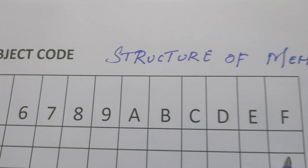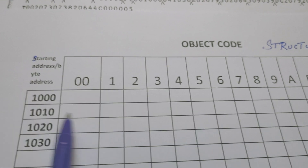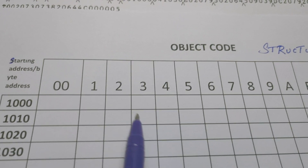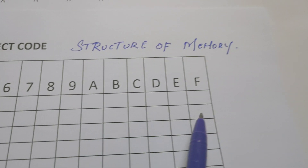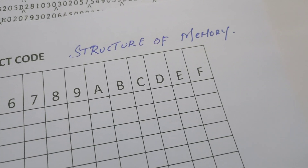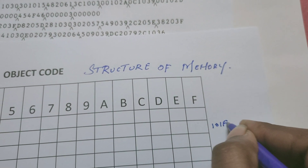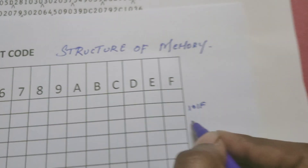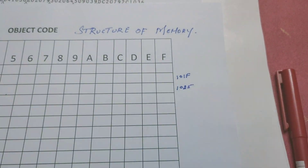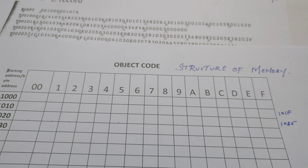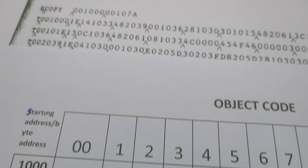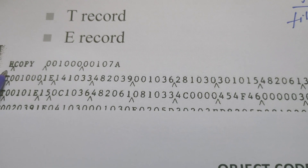After 100F the next address is 1010, then 1011, 1012, 1013, continuing through the memory. The last location shown is 101F, and the next is 1020, 1021, 1022, 1023, 1024, 1025 up to 102F. Memory is available as per the object file, and we are going to write the object codes into these locations.